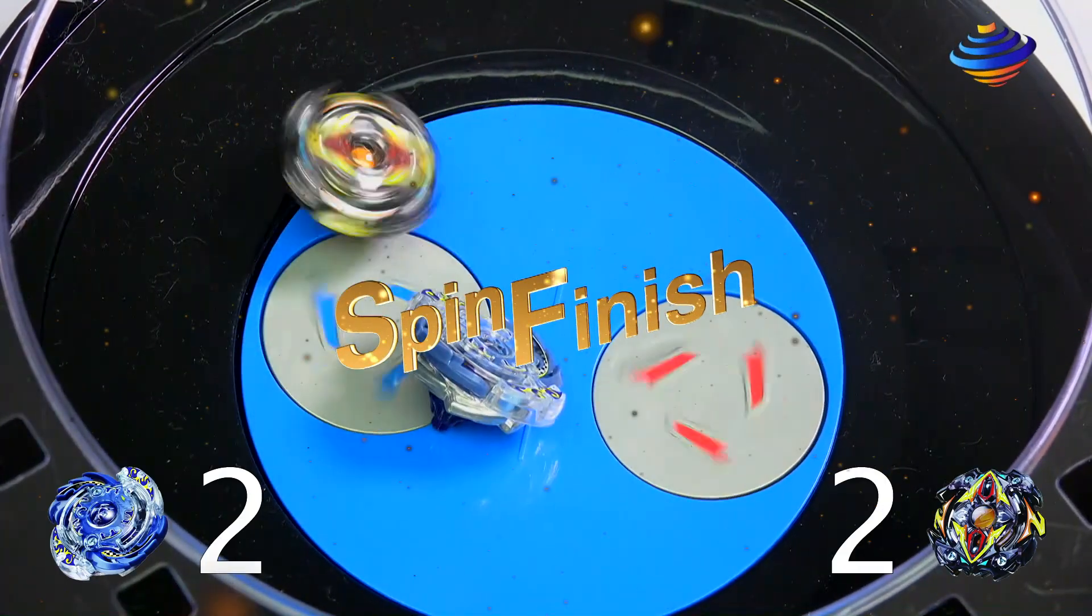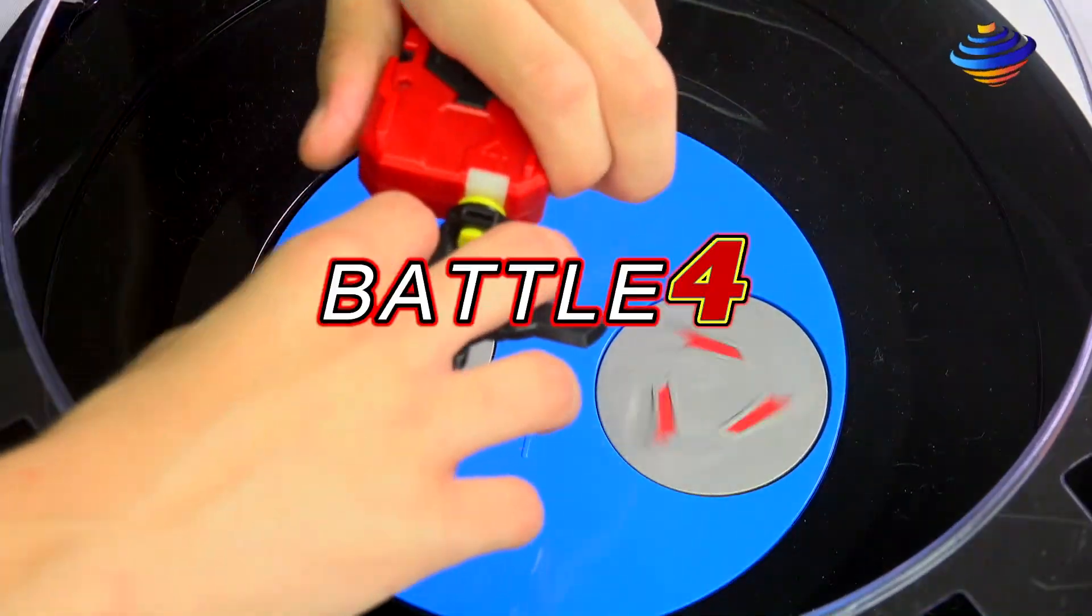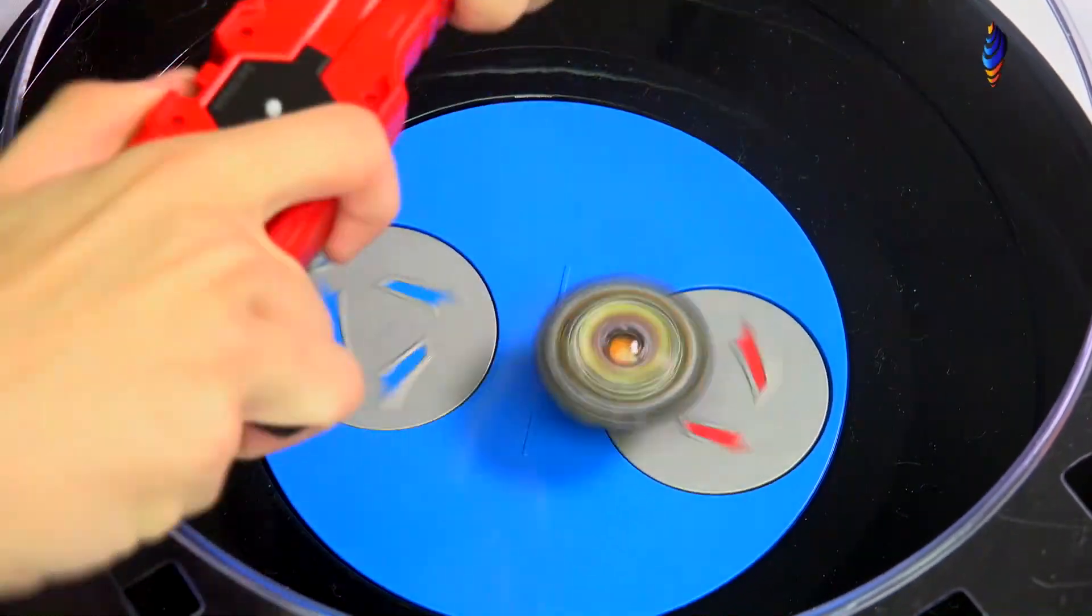Zeus wins 2-2, the tie breaks in battle 4. Battle 4, 3-2-1, go shoot. And 3-2-1, go shoot.